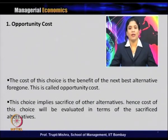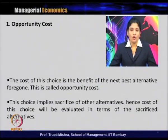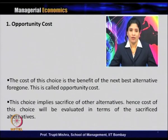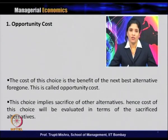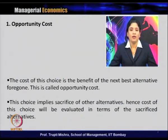The cost of this choice is the benefit of the next best alternative forgone — and this is opportunity cost. When an economic agent chooses the first alternative for utilizing resources, the cost associated with that choice is the benefit of the next best alternative forgone. Choice of this alternative implies sacrifice of other alternatives, so the cost is evaluated in terms of the benefit from the sacrificed alternative.